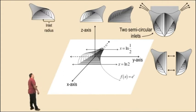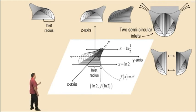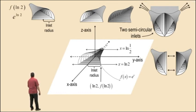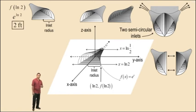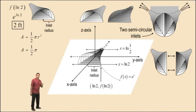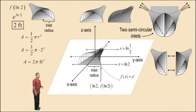In order to do this, we must look at the ordered pair natural log of 2, f of natural log of 2, where f of natural log of 2 represents the inlet radius. To evaluate f of natural log of 2, we have e to the natural log of 2, which is 2. Note that our dimensions here are feet, therefore our inlet radius is 2 feet. To find the area of a semi-circular inlet, we use the equation 1 half pi r squared, replace r with 2 feet, and we get the result 2 pi feet squared.